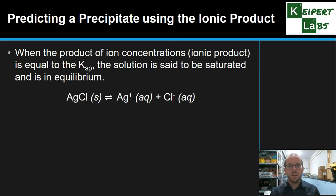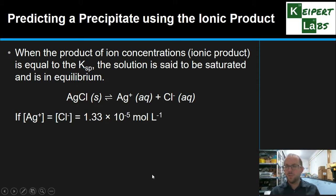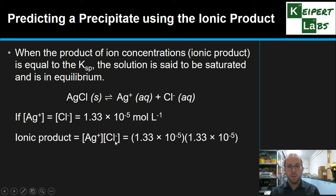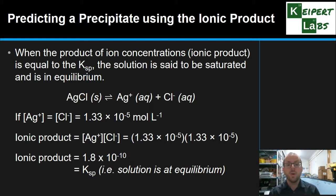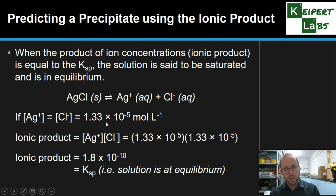So if we look at silver chloride — if silver and chloride concentrations are both 1.33 times 10 to the minus 5 moles per litre — this is our ionic product expression. We multiply those together and get 1.77 times 10 to the minus 10, which equals our KSP value. Therefore we can say the solution is at equilibrium when we have these values.